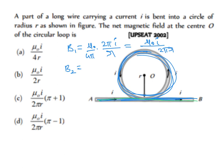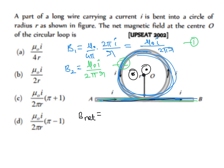B2, the magnetic field due to the straight conductor, equals μ₀I / (2πd), where d = R, so B2 = μ₀I / (2πR). Now checking directions: due to the circular coil, the field at center O is out of the plane of the paper. Due to the straight conductor, the field is also outward — so both B1 and B2 are in the same direction, with an angle of 0° between them.